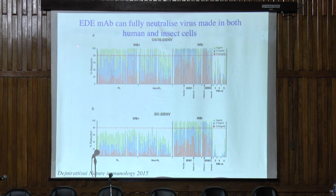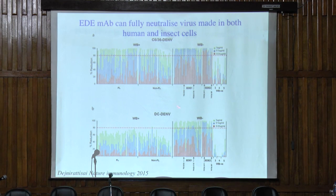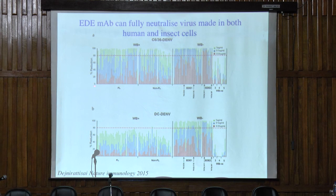The next experiment was to test whether these antibodies would be able to neutralize viruses made both in insect cells and in primary human dendritic cells. So we made viruses in either insect or human cells and then tested the ability of these 150 antibodies to neutralize the virus.